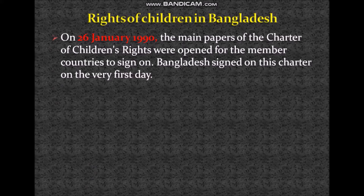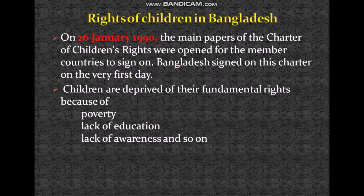That means the UN didn't open the main papers of the Charter of Children's Rights on the very first day of declaration, which is 20th of November 1989. Rather, after two months — that is, on 26th of January 1990 — the papers were opened. And Bangladesh signed on this Charter on the very first day. So if the question comes, when did Bangladesh sign on the Charter of United Nations Children's Rights, the answer will be on 26th of January 1990.